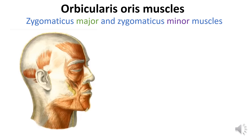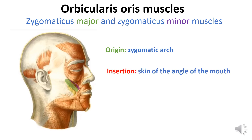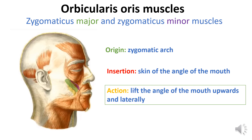Zygomaticus major and zygomaticus minor muscles originate from the zygomatic bone near its suture with the zygomatic process of the temporal bone and insert into the skin of the corner of the mouth, with part attached to the mucous membrane of the cheek. These muscles pull the corner of the mouth to the outside and upward.